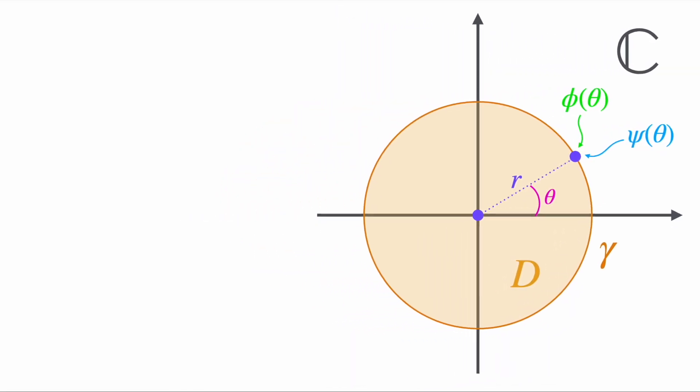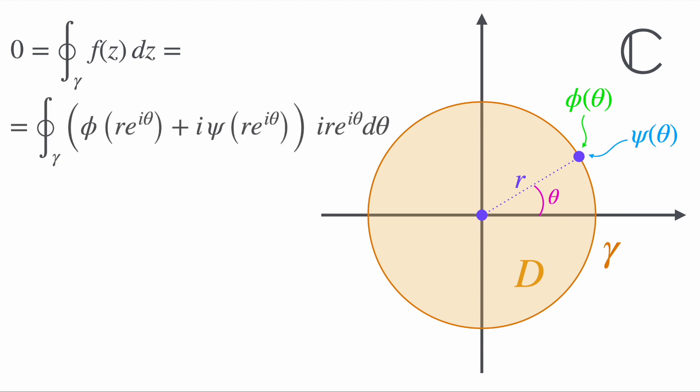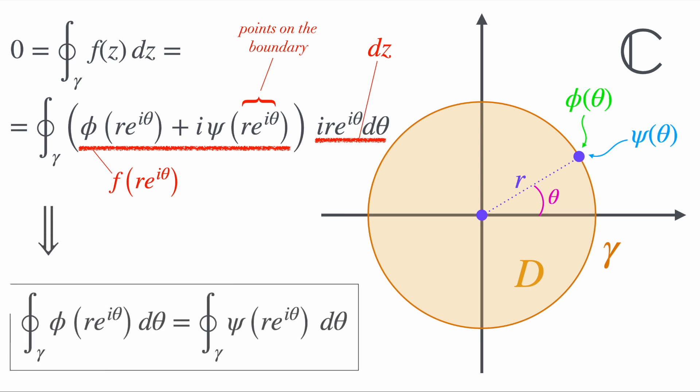Now we can use Cauchy's theorem. We set zero equal to this line integral. We can expand f and dz, because we're describing just the boundary — r times e to the power of i theta represents points on the boundary of d. Working through the math, we find an equation telling us that the integrals of phi times e to the power of i theta and psi times e to the power of i theta over gamma must be equal.